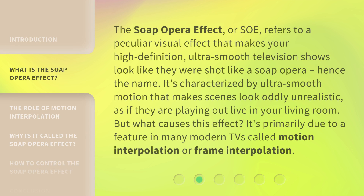The Soap Opera Effect, or SOE, refers to a peculiar visual effect that makes your high definition, ultra-smooth television shows look like they were shot like a soap opera, hence the name. It's characterized by ultra-smooth motion that makes scenes look oddly unrealistic, as if they are playing out live in your living room. But what causes this effect?